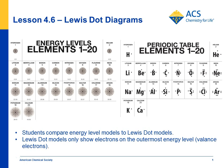In lesson 4.6, students are introduced to Lewis dot diagrams or Lewis dot structures. The lesson uses a periodic table of energy level models that they've seen before and a periodic table of Lewis dot structures which they haven't seen, and we compare the two to see how they're related.